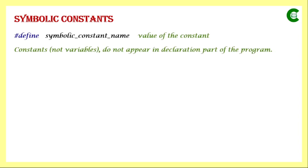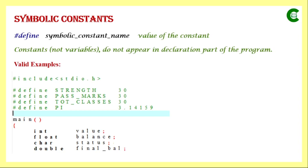We have to remember that symbolic constants are not like other variables. They do not appear in the declaration part of the program the way other variables appear. In a sample program we can have symbolic constants like STRENGTH, PASS_MARKS, TOTAL_CLASSES, and PI — all using the preprocessor directive #define. These are declared after we mention all the header file names used in that program, with their corresponding constant values. Then the main function starts, and within its braces we write the declaration and execution parts, declaring all other variables used in that program.